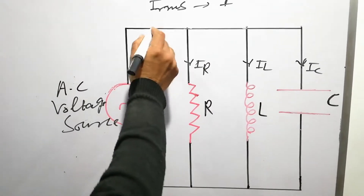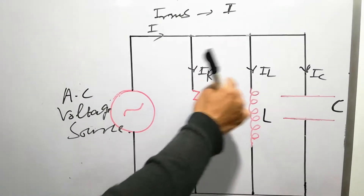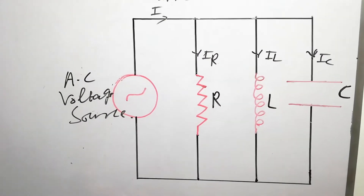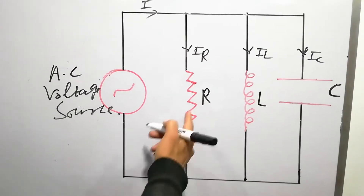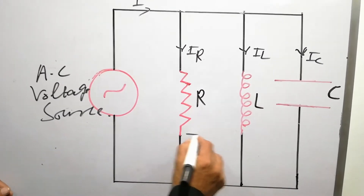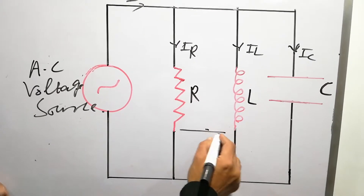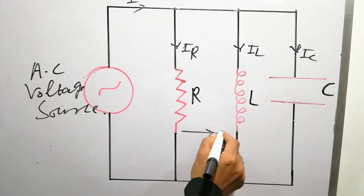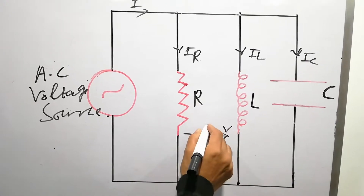The current is divided here. I is the total current, which is divided into IR, IL, and IC. Through the resistor, current and voltage are in phase — they lie in the same direction.